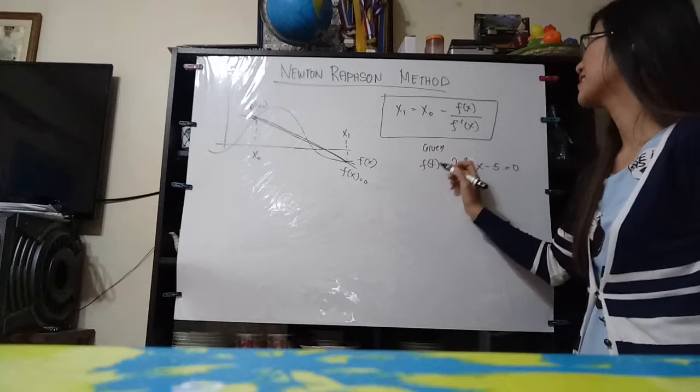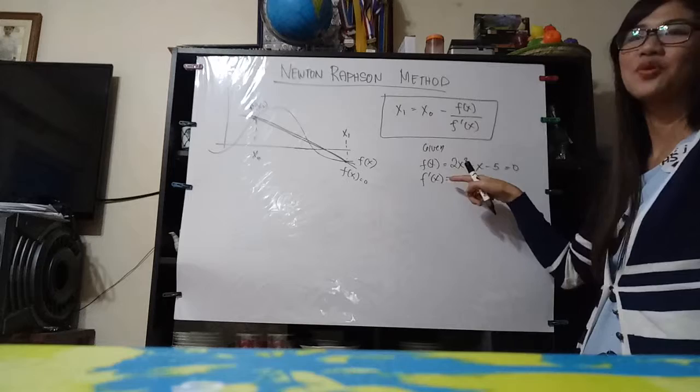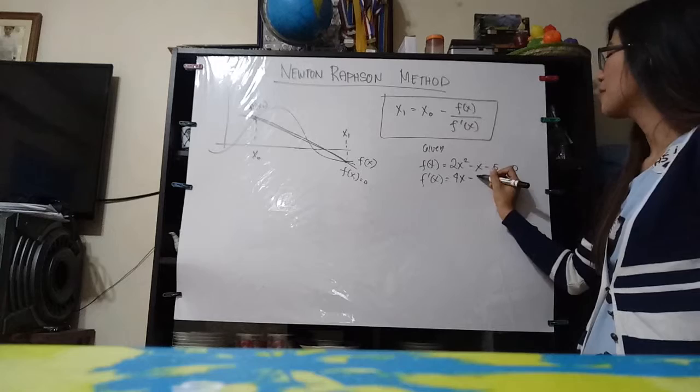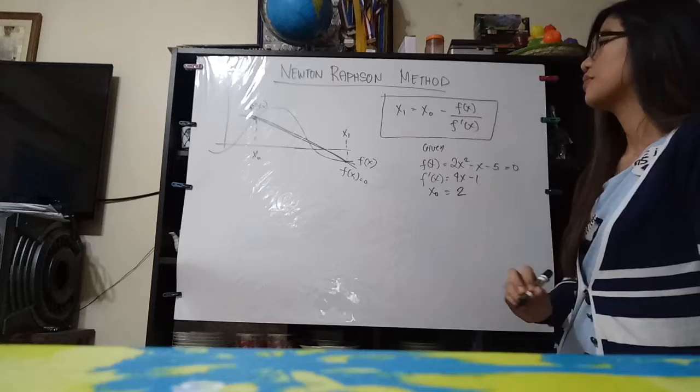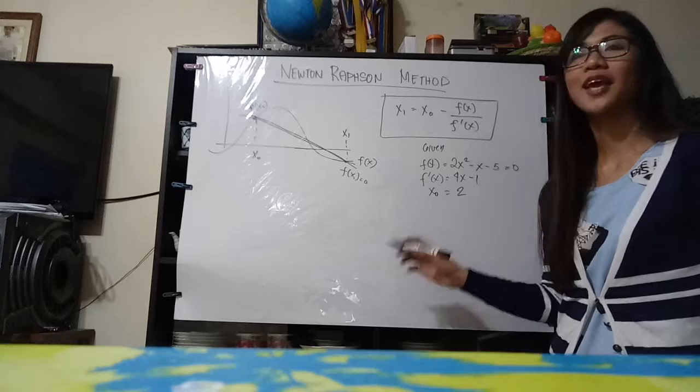And then we find the derivative of this. The derivative of x would be 2 times 2, which is 4x, minus 1. And say that our x of 0, we will start at 2.